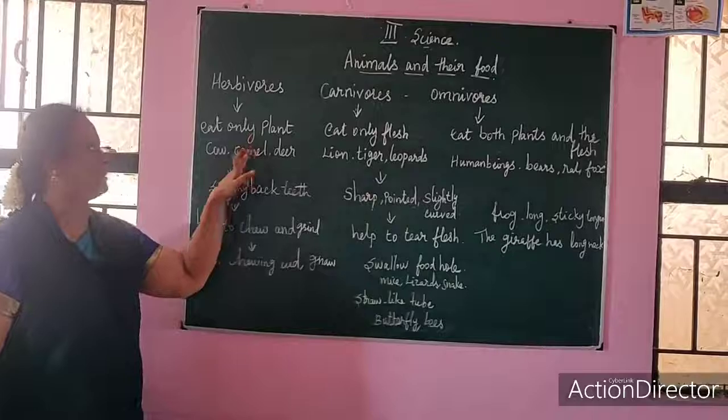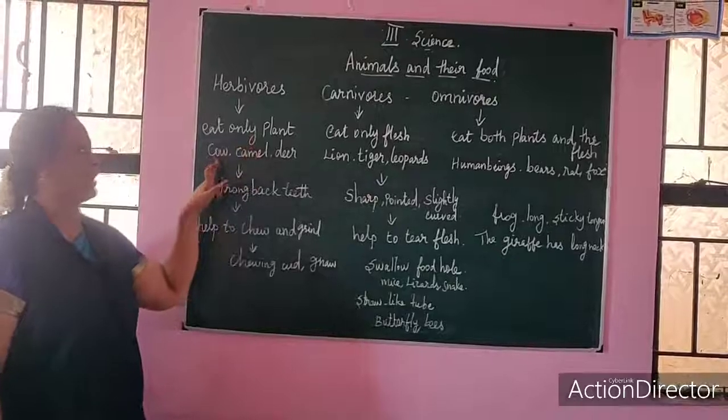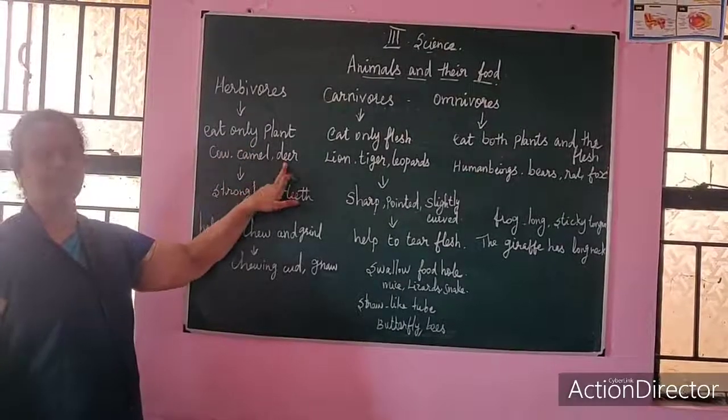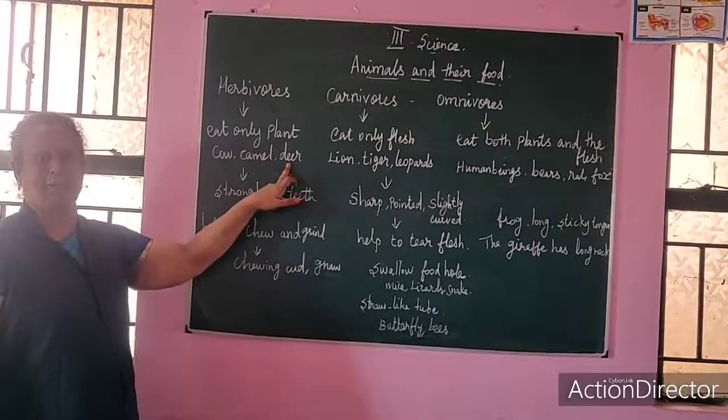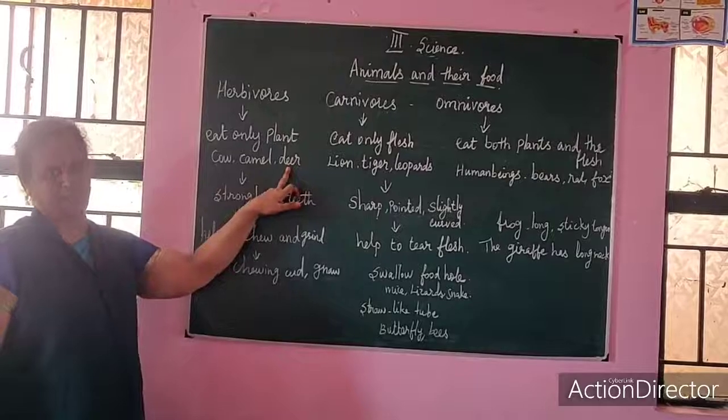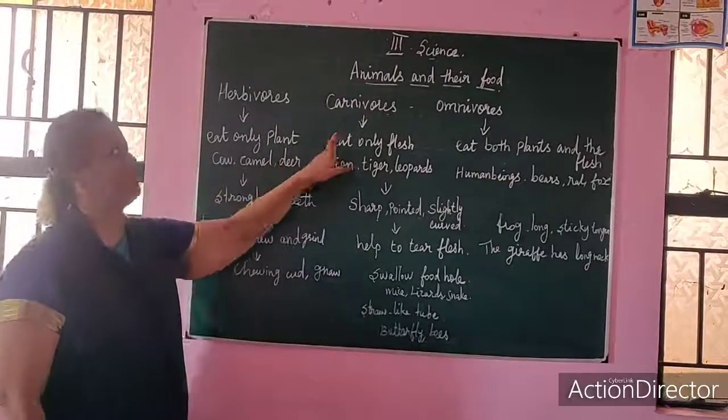Herbivore animals eat only plants, not flesh. Examples are cow, camel, and deer. These are plant-eating animals.